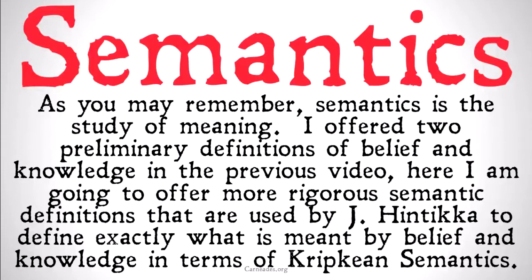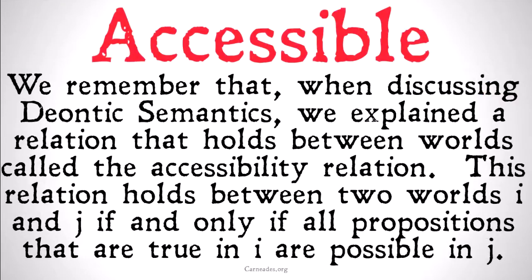Hopefully, at some point in the future, I'm going to do a video or a video series on Kripkean semantics. For now, we're just going to get a basic idea of what we're talking about. The accessibility relation — we may remember, if you watched earlier videos in this series when discussing deontic semantics — we explained that a relation that holds between worlds can be called the accessibility relation. This relation holds between two worlds, I and J, if and only if all propositions that are true in I are possible in J.